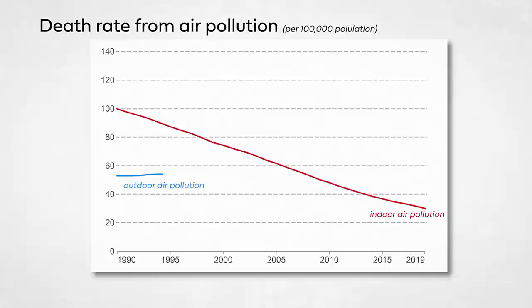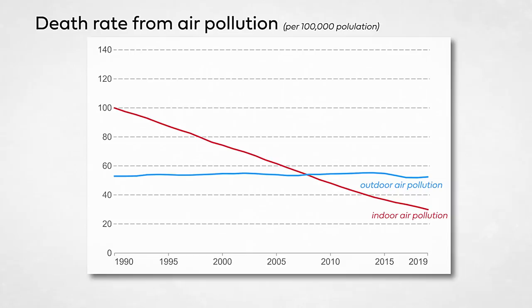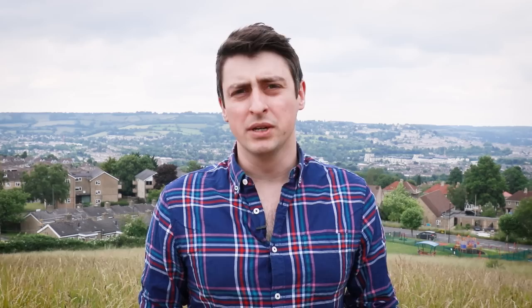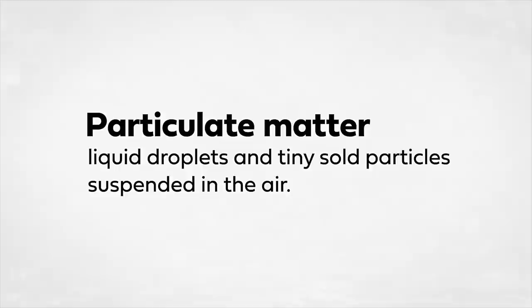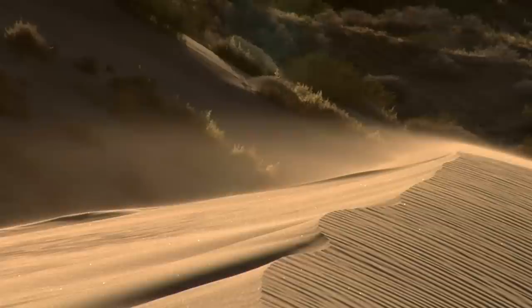Unfortunately, however, over the same time period, the death rate from outdoor air pollution has stayed the same. Outdoor air pollution is a different beast to indoor air pollution. Instead of being caused by one type of fuel being burned for basically two purposes, its sources are diverse. And while it's comprised of multiple different components in the air, its impact on health can be summarised by just one: particulate matter. In simple terms, particulate matter refers to liquid droplets and tiny solid particles suspended in the air. We categorise them by size, with coarse particles being between 10 and 2.5 microns across, and fine particles being less than 2.5 microns in diameter.